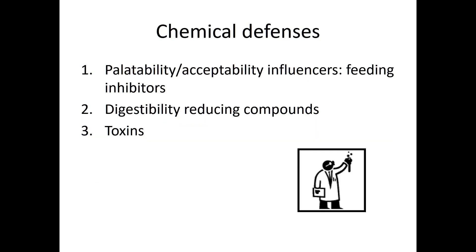Another way to think about chemical defenses is to categorize them as: palatability or acceptability influencers — also called deterrents or inhibitors — that's the first class; digestibility-reducing compounds, the second category; or finally the broadest category, flat-out toxic compounds.